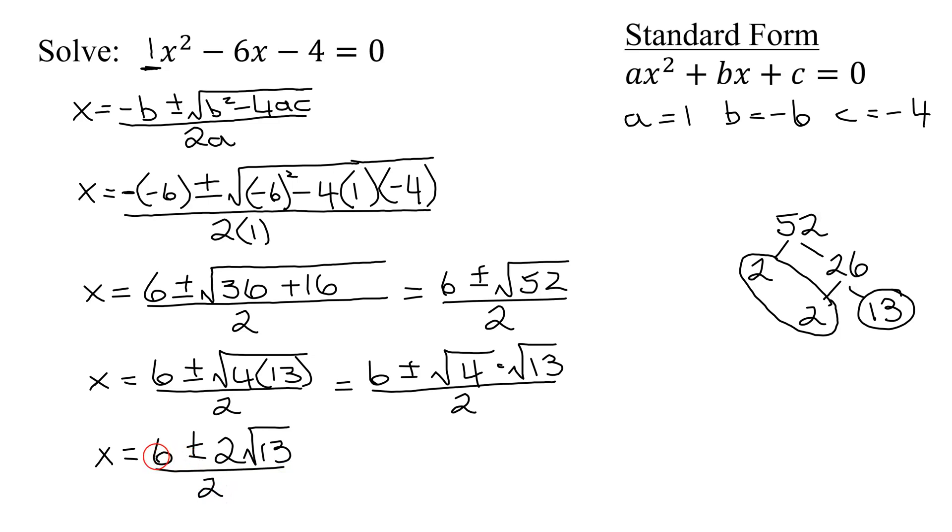So x equals 6 plus or minus the square root of 4 times the square root of 13. Now notice this term, this term, and this term are all divisible by 2.